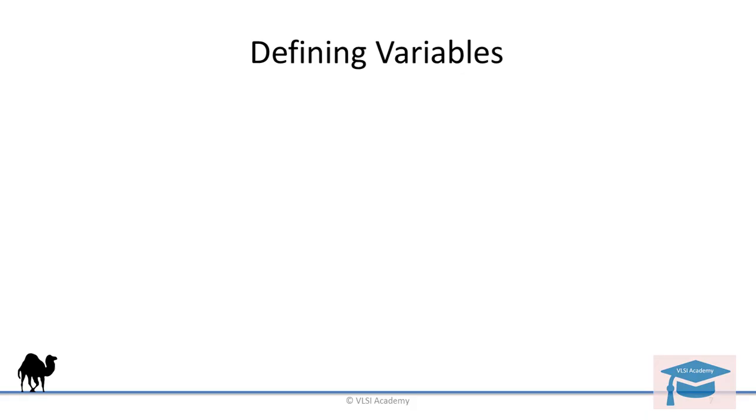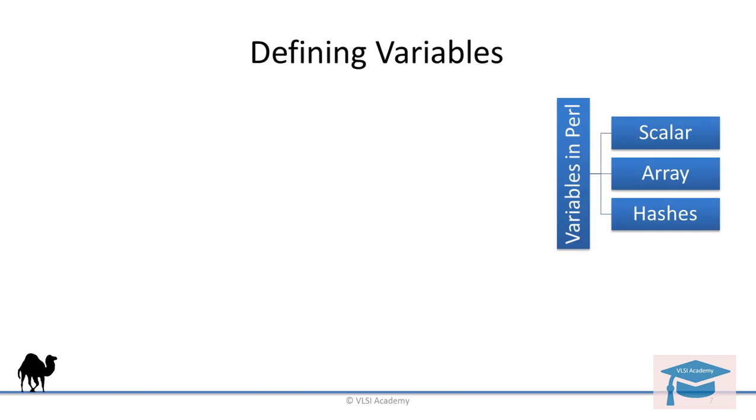There are three types of variables in Perl. Broadly speaking, it is array, scalar and hashes. We will see the difference between them in further videos.